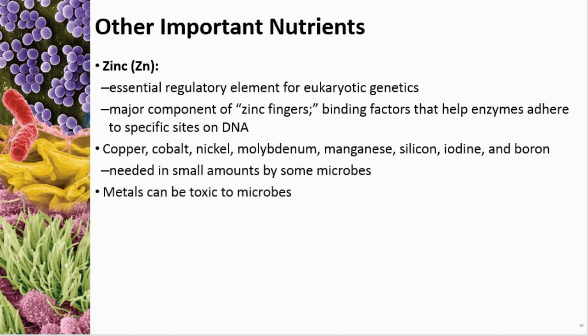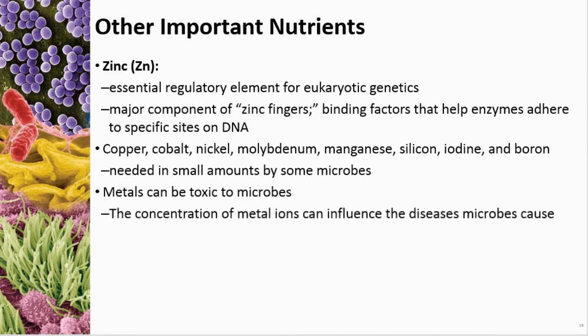Metals can be toxic to microbes or any other animal. What happens is metal ions disrupt specific chemical processes in the organism, causing disease, or they can deposit themselves in nervous tissue in multicellular organisms.